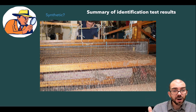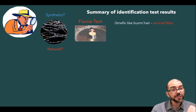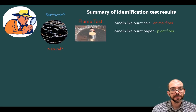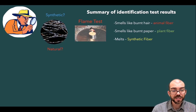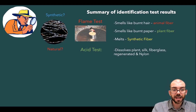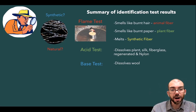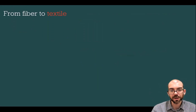To summarize all the ways to identify fibers: on a flame test, if it smells like burnt hair it's an animal fiber; if it smells like burnt paper it's a plant fiber; and if it melts instead of burning, you're dealing with something synthetic. Applying acid to a fiber — if it dissolves, it is a plant fiber, silk, fiberglass, a regenerated fiber, or nylon. If you apply a base and it dissolves, you're dealing with wool. These are common tools to help narrow down what you're working with.